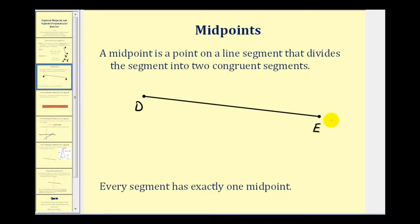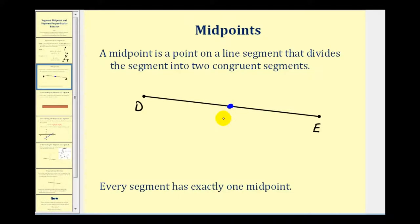Now let's talk about midpoints. A midpoint is a point on a line segment that divides a segment into two congruent segments. So the midpoint of segment DE looks like it'd be right about here. Let's label this point M. So if M is the midpoint of segment DE, then segment DM is congruent with segment ME.